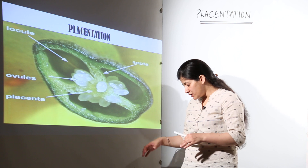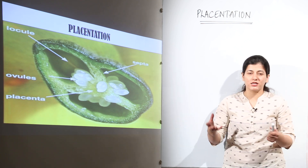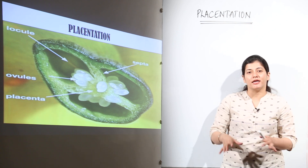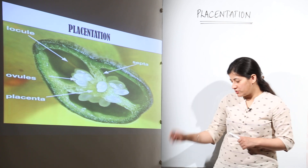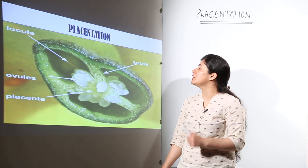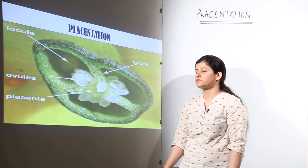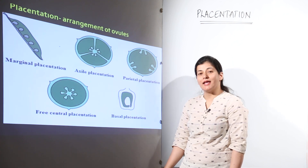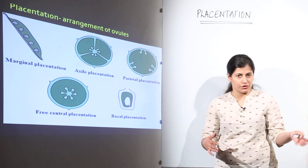When you observe the ovaries of different flowers, there are many types of arrangements in which the placenta can occur, and that is known as placentation. We are going to see the various types of placentation observed in plants.